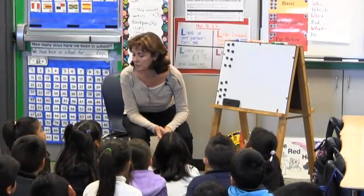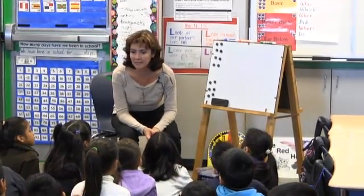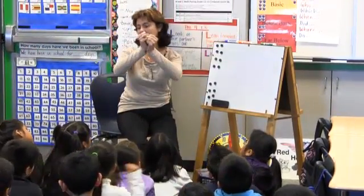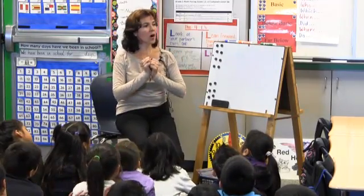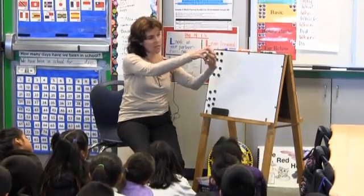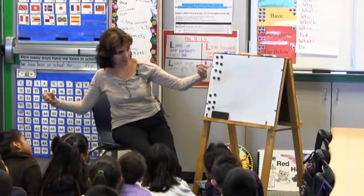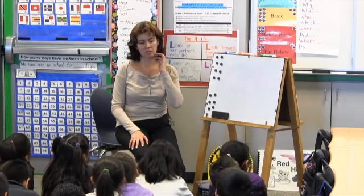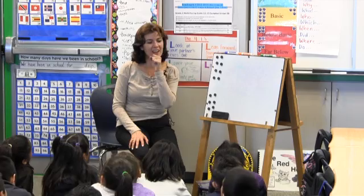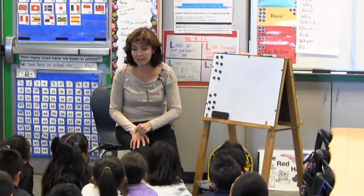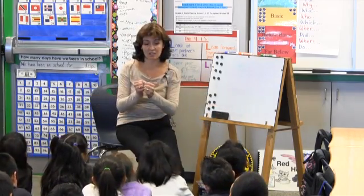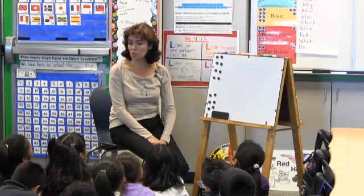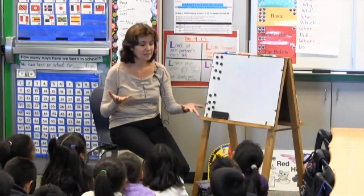Ever since you've been in kindergarten, you've been learning about arithmetic operations. Which is the one that puts two amounts together? Addition. Which is the one that takes it away? Subtraction. We have also learned the shortcut for addition — multiplication. And now we are learning the shortcut for subtraction, which is division.